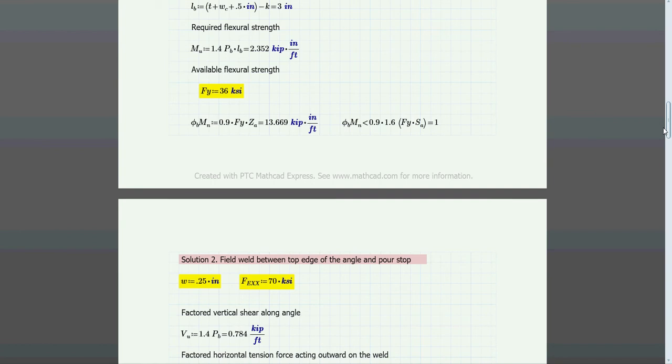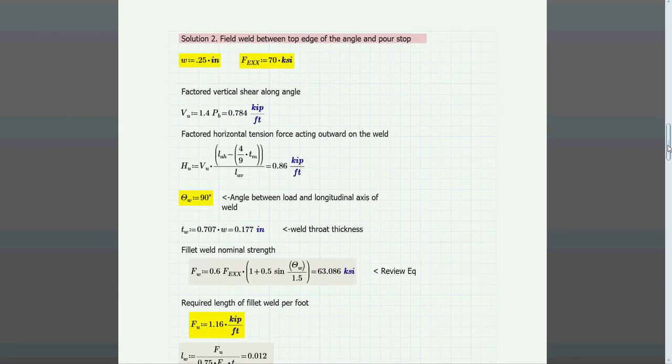You have two L angles in different orientations—one is like a top L and the bottom one is a bottom L. Now we're going to check the weld between them to see if it's appropriate to take this load transfer.